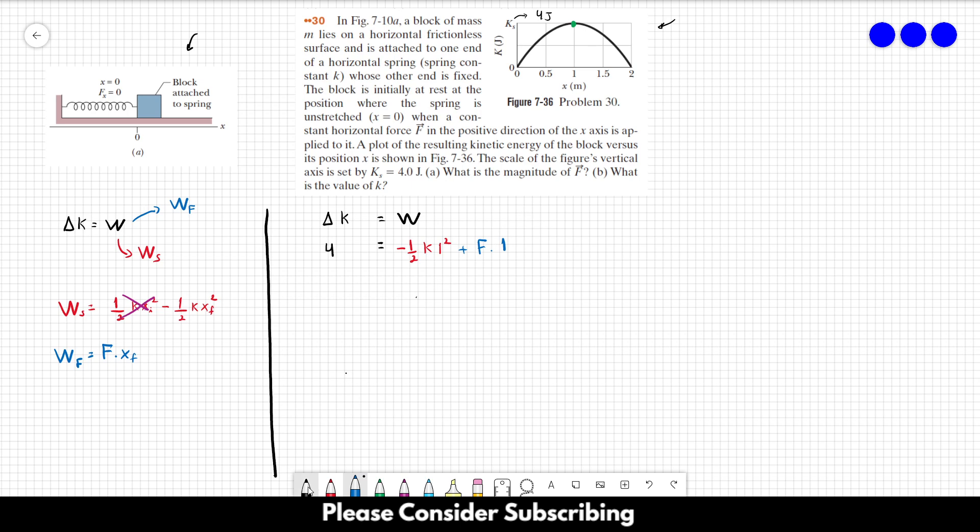Okay, so we have one equation over here, which is equal to 4, minus k over 2 plus F. So this is the first equation that we have.